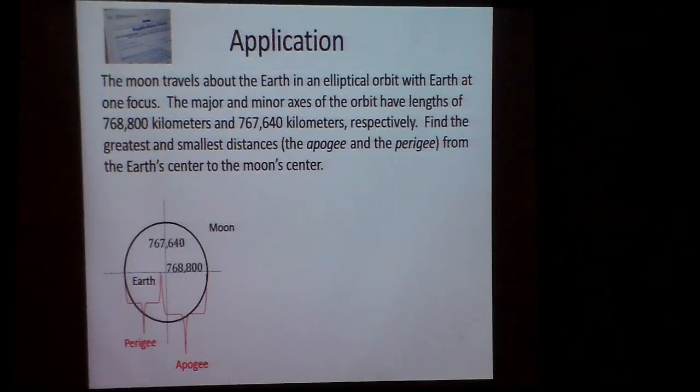The moon, as you can see, travels about the earth in the elliptical orbit with the earth being at one of the focus points. The major and minor axis of the orbit have lengths of, and it tells us right there, 768,800 kilometers. That would be my major axis, and my minor would be 767,640. Notice they're going to be pretty close together.